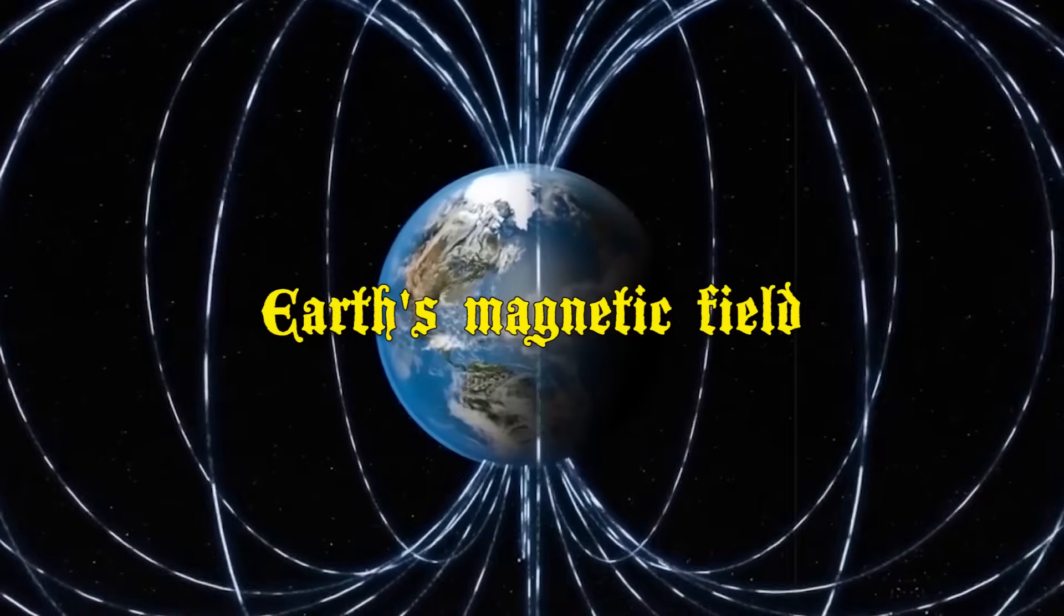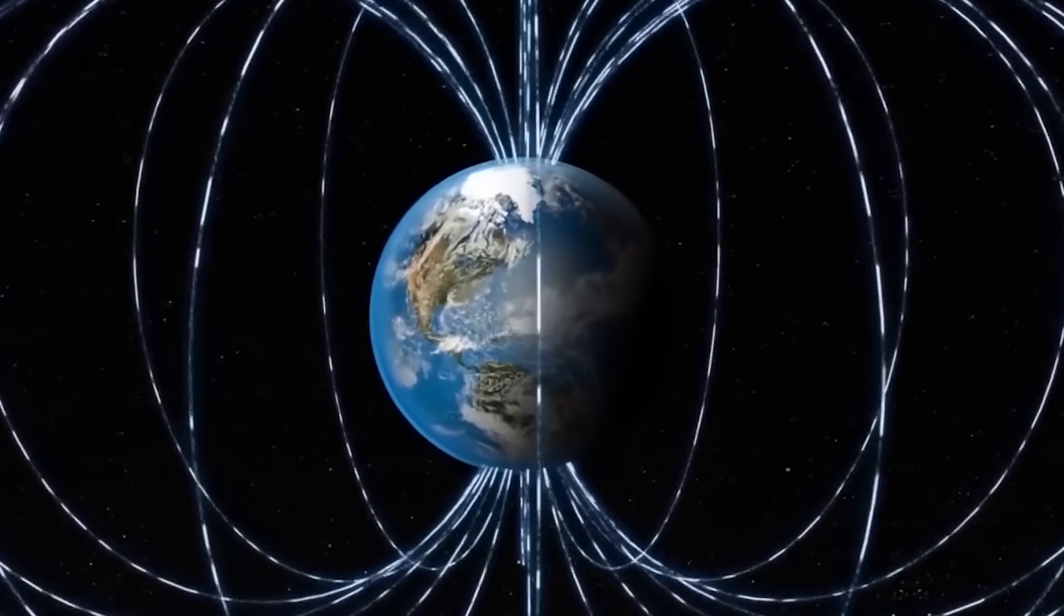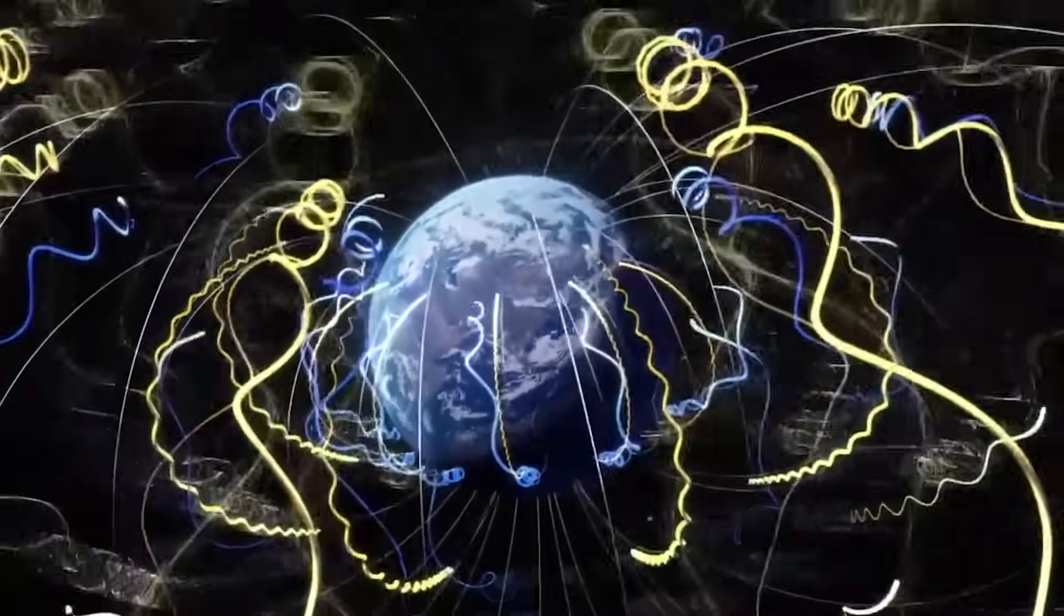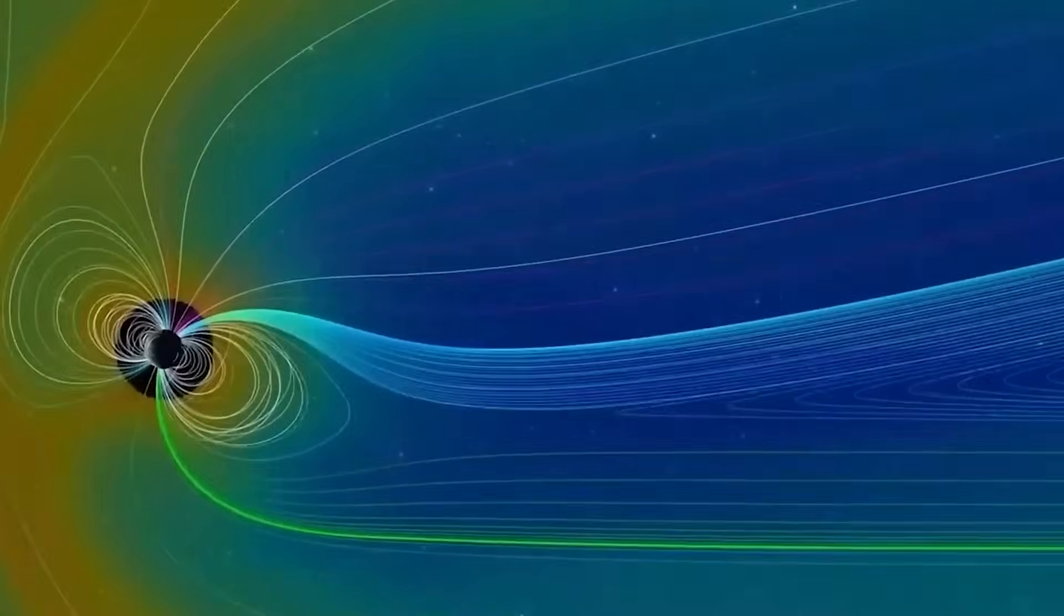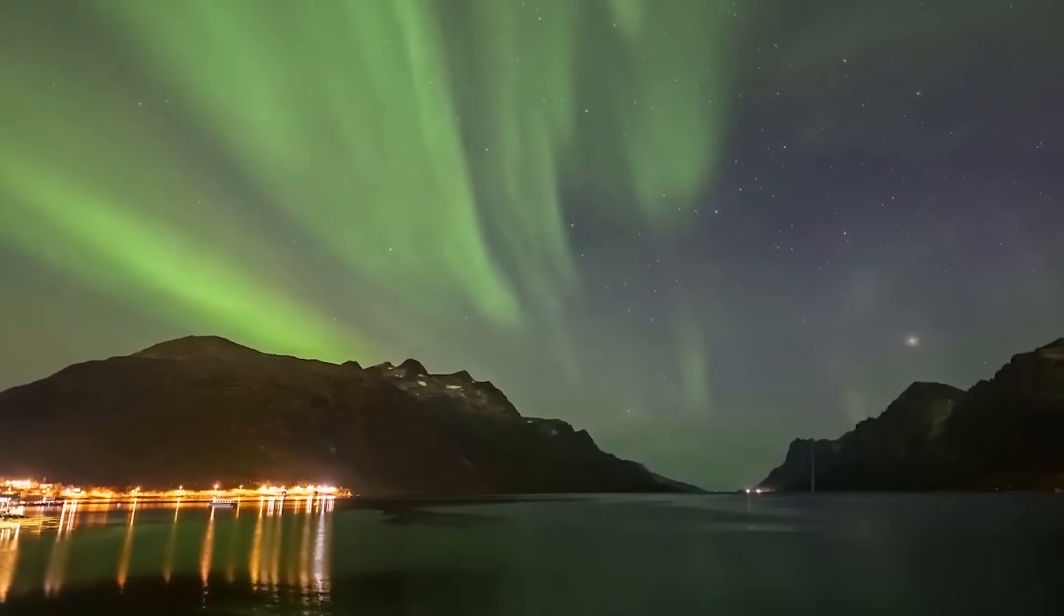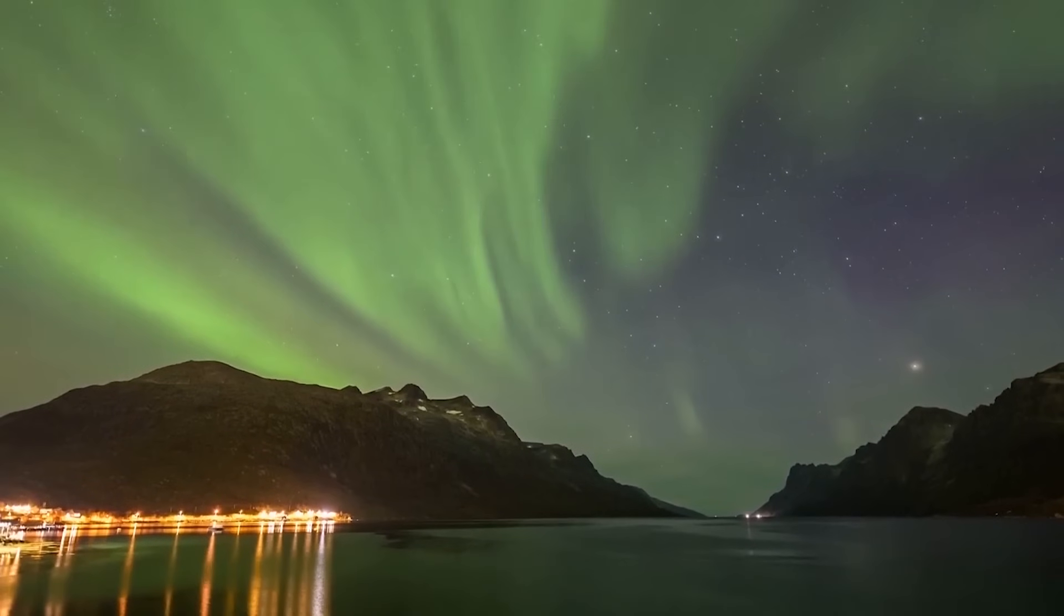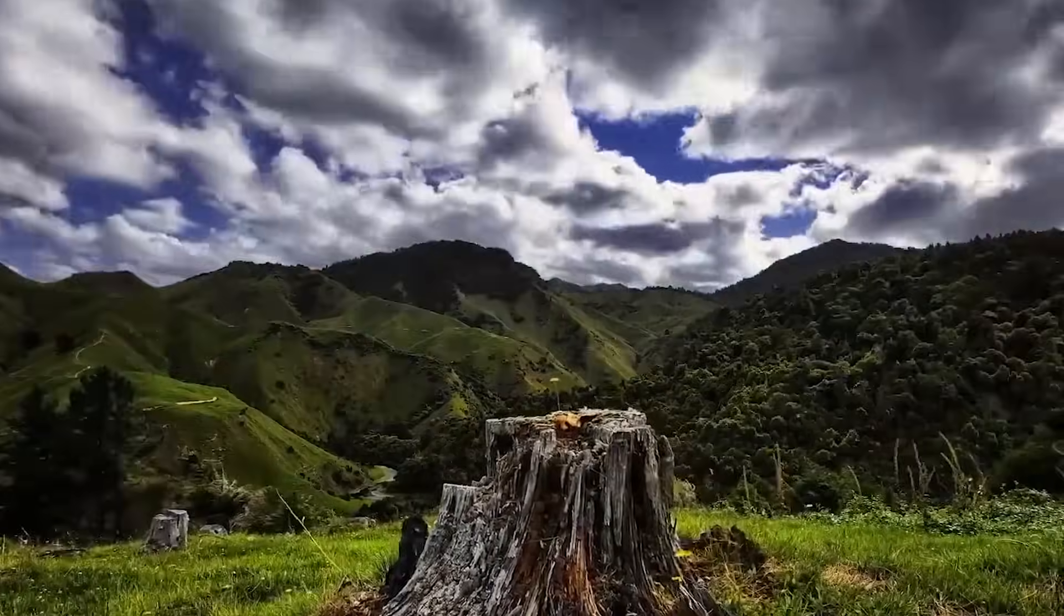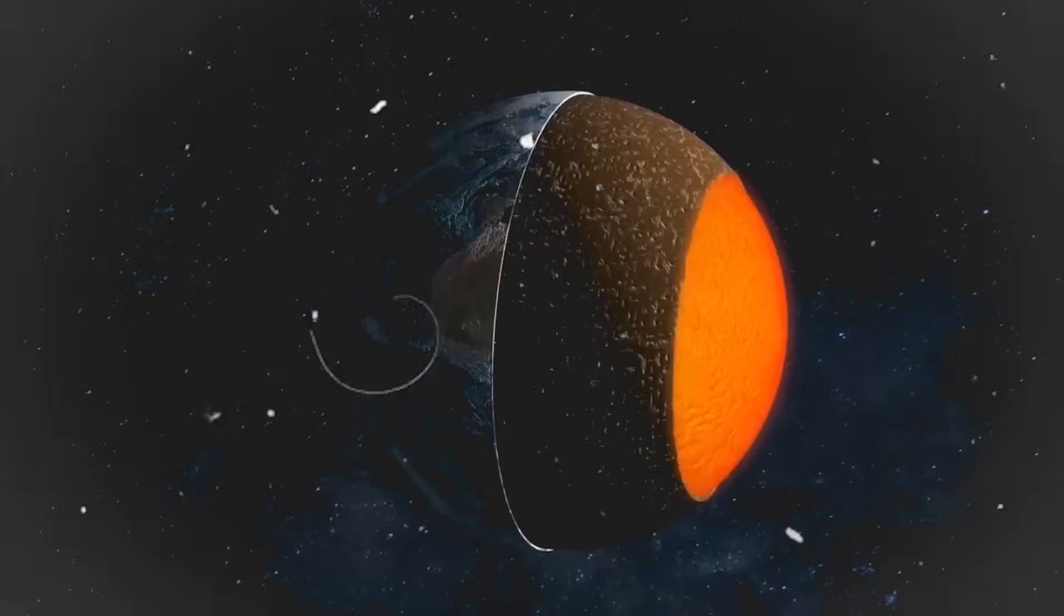Earth's magnetic field, an invisible yet powerful force, envelops our planet and serves as a critical shield. It protects Earth from the harsh solar winds and cosmic radiation that could otherwise strip away our atmosphere and harm life. This magnetic barrier is crucial for maintaining the stability and safety of our environment.